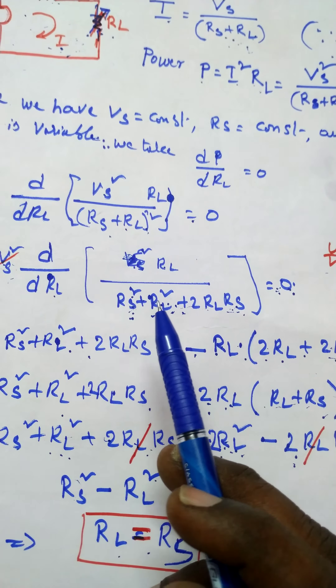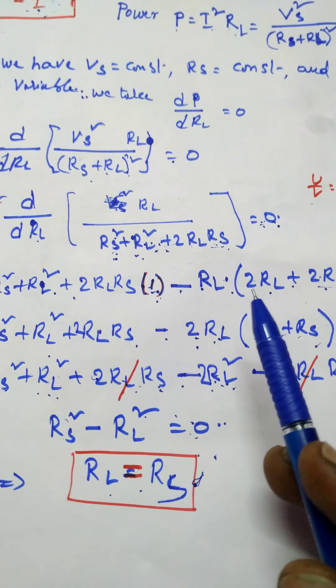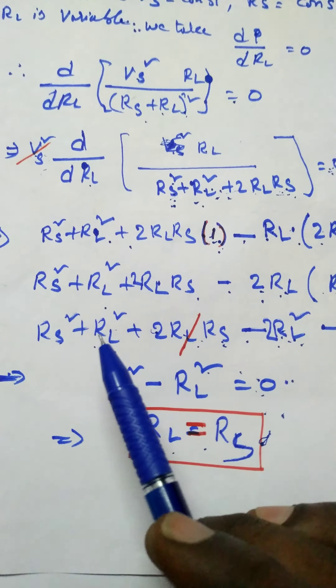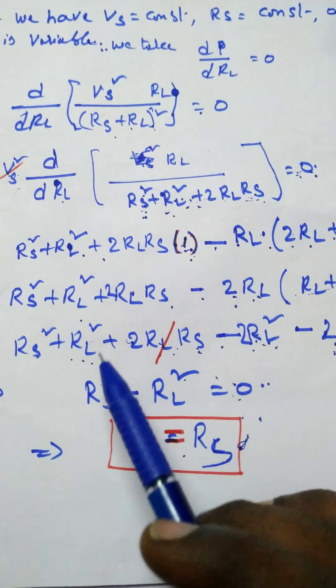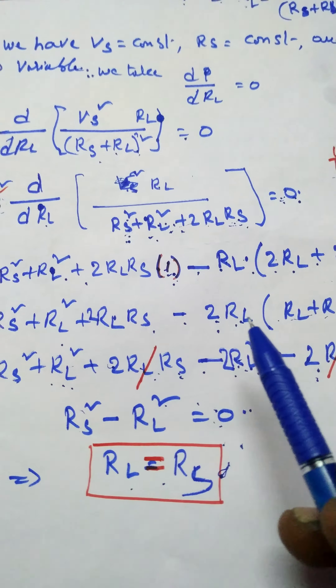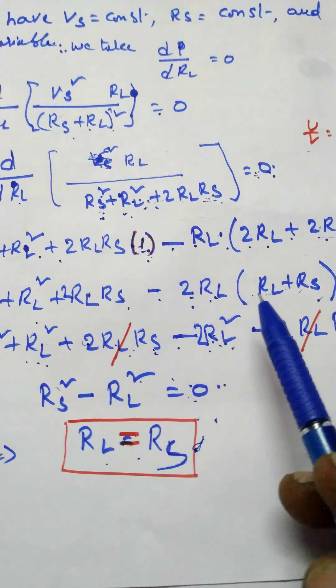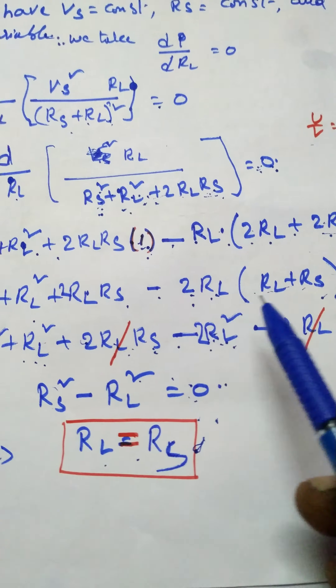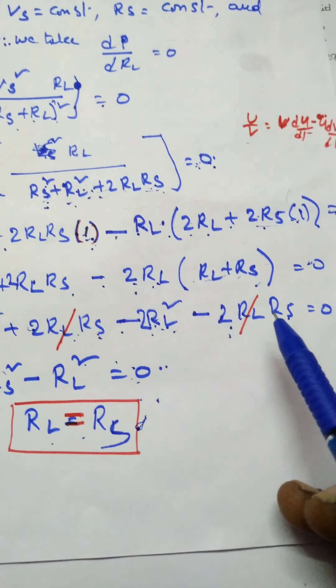Simplifying this equation: RS squared plus RL squared plus 2·RL·RS minus 2·RL·(RL plus RS) equals zero. Expanding the bracket gives RS squared plus RL squared plus 2·RL·RS minus 2·RL squared minus 2·RL·RS equals zero.